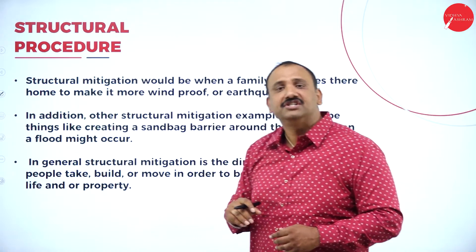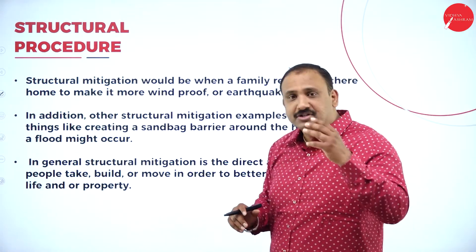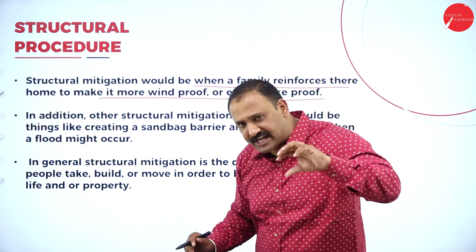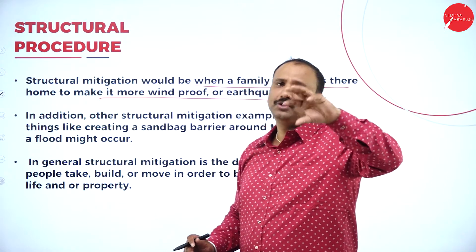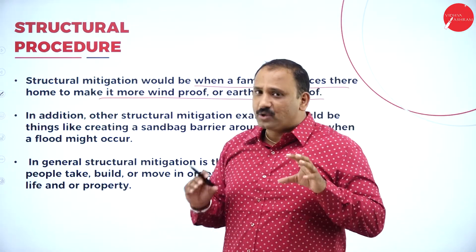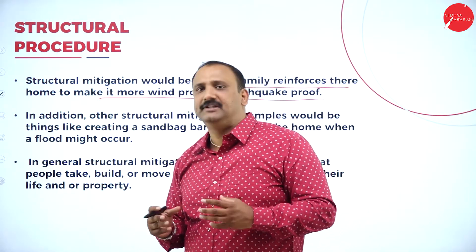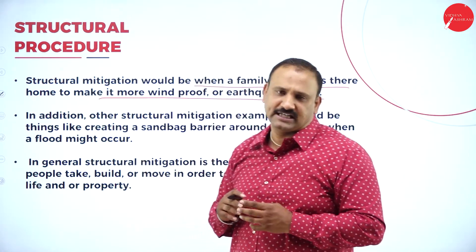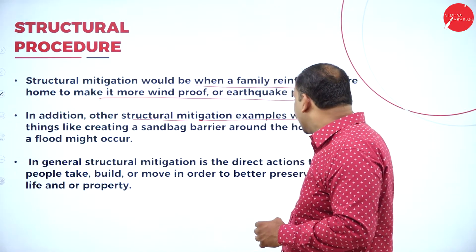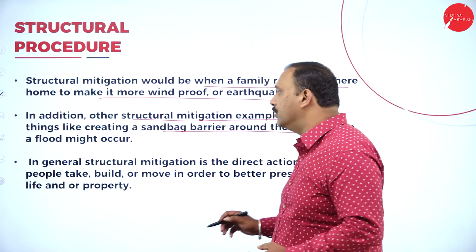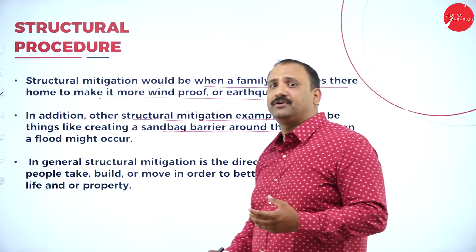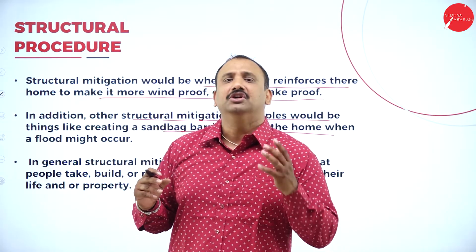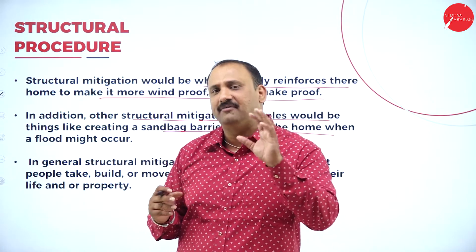Structural mitigation would be when a family reinforces their home to make it more windproof or earthquake proof, meaning the family wants to make their area more secure so that whatever the conditions, the physical structure is as strong as possible. Other structural mitigation examples include creating a sandbag barrier around the home when a flood might occur, or putting up a shield or mesh — something that stands as a physical structure to prevent the disaster from having a direct impact on you.